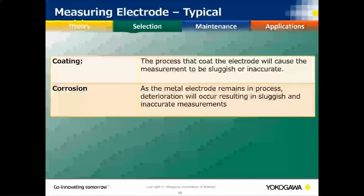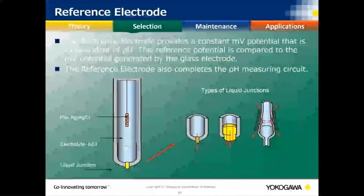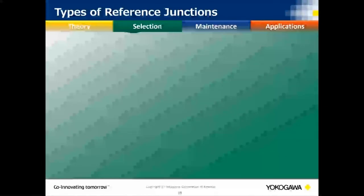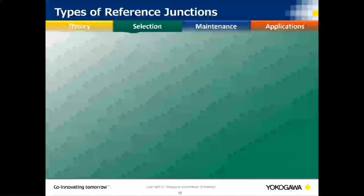Typical problems with ORP include coating of the platinum metal over time with process buildup, and corrosion. If the application reacts with platinum or gold, make sure you have the right metal. The reference is traditionally the same as a pH reference, so any problems — coating, plugging — will be the same. We need the right junction type, the right reference internal fill solution, and proper cleaning.